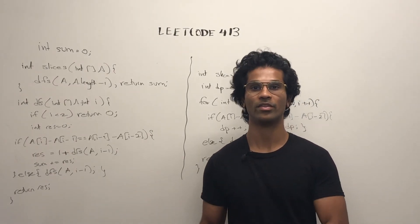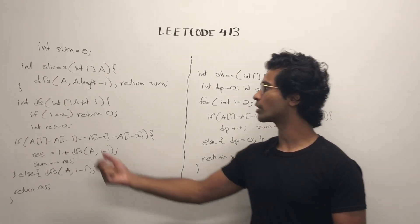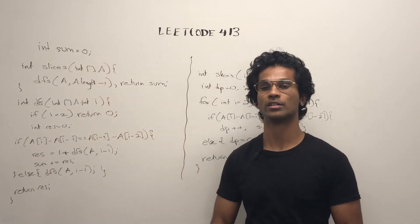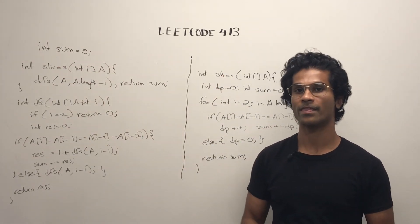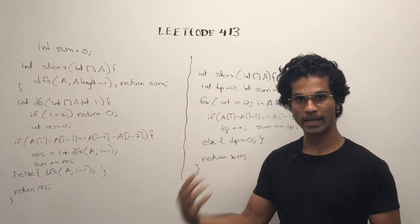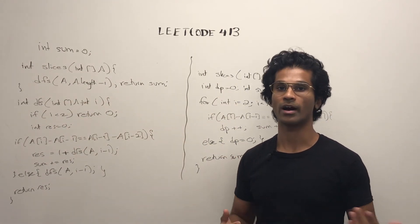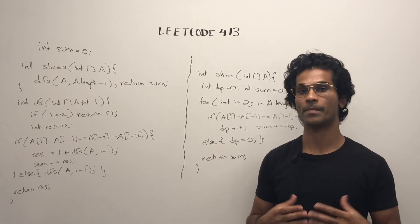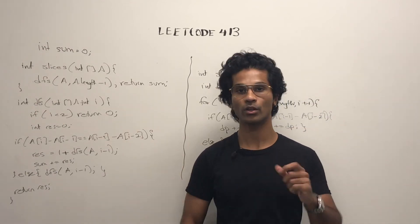Here's the top-down and the bottom-up approach. For the recursive version, first we initialize a global variable sum, and then we pass into our recursive function, the array, and the pointer pointing to the end. If that pointer i ever gets less than 2, then we know we've hit a base case and return 0.